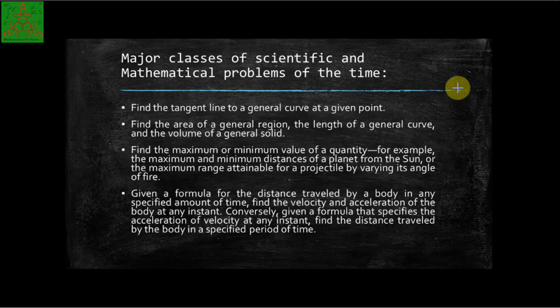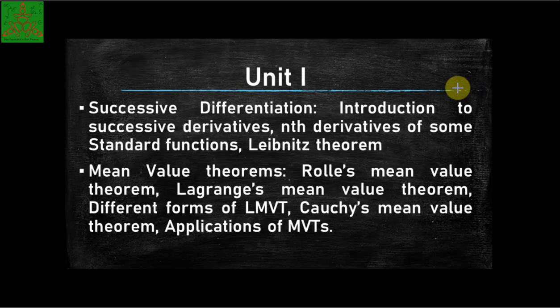The fourth problem that was discovered in history and done by Newton and Leibniz is: given a formula of the distance traveled by a body in any specific amount of time, find the velocity and acceleration of the body at an instant time. Conversely, given a formula that specifies acceleration or velocity at any instant, find the distance traveled by the body in a specific period of time. So differentiation that we have studied in your 12th standard is finding the instantaneous rate of change. Now let us see how many things we are going to study in this course.